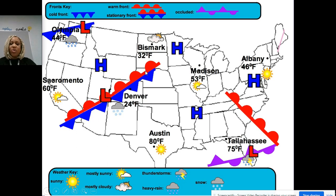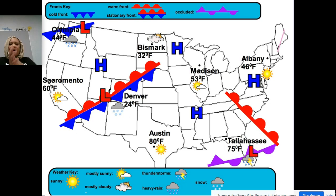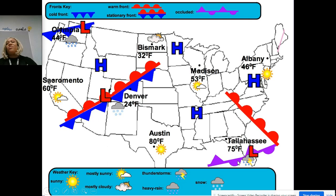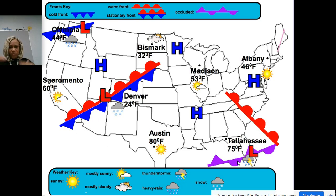Your stationary front will always look like a combination of the warm and cold fronts together because they're stationary — they're blocking one another, so neither one is moving. The occluded front has both cool and warm fronts in it, but it is not stationary — it is moving. And here are your high-pressure and low-pressure symbols.